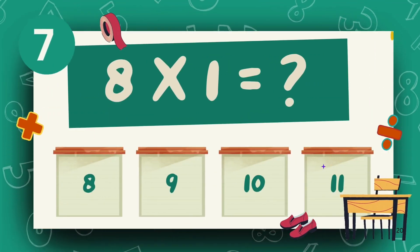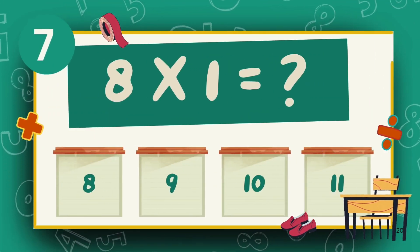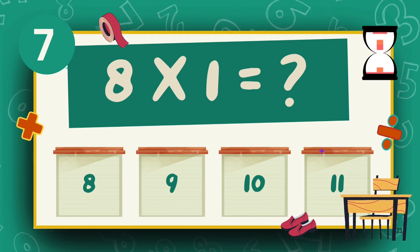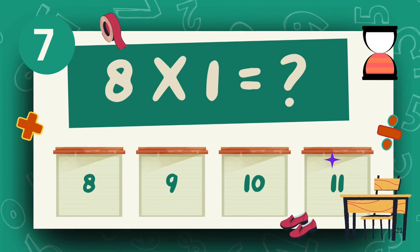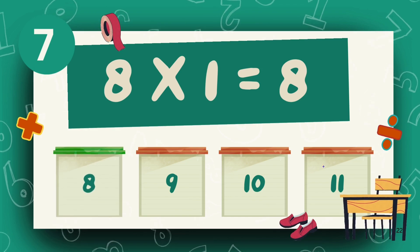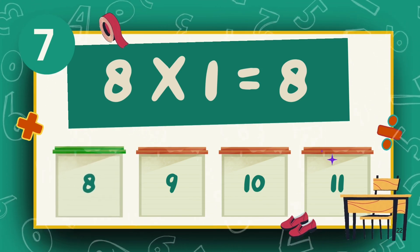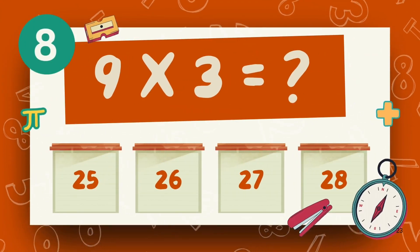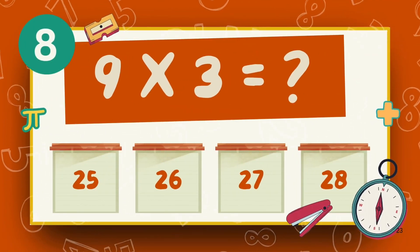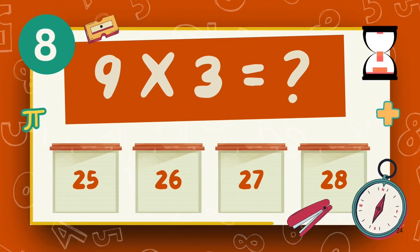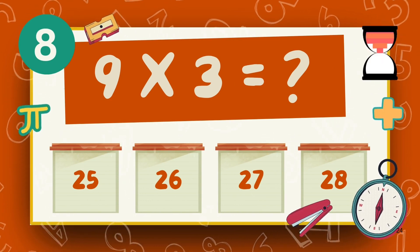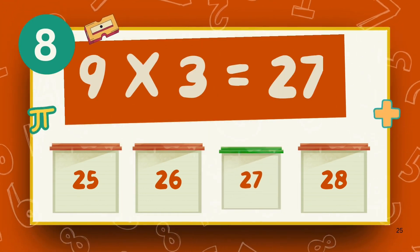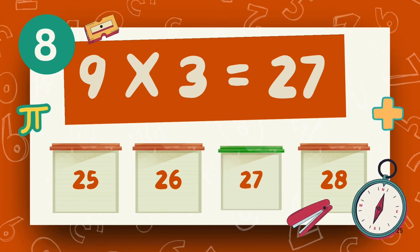What is 8 multiply 1? The answer is 8. What is 9 multiply 3? The answer is 27.